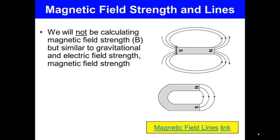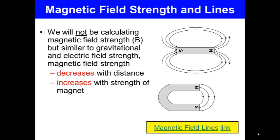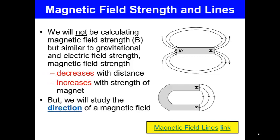We will not be calculating magnetic field strength, but similar to gravitational and electric field strength, magnetic field strength decreases with distance and increases with the strength of the magnet. However, we will study the direction of a magnetic field.